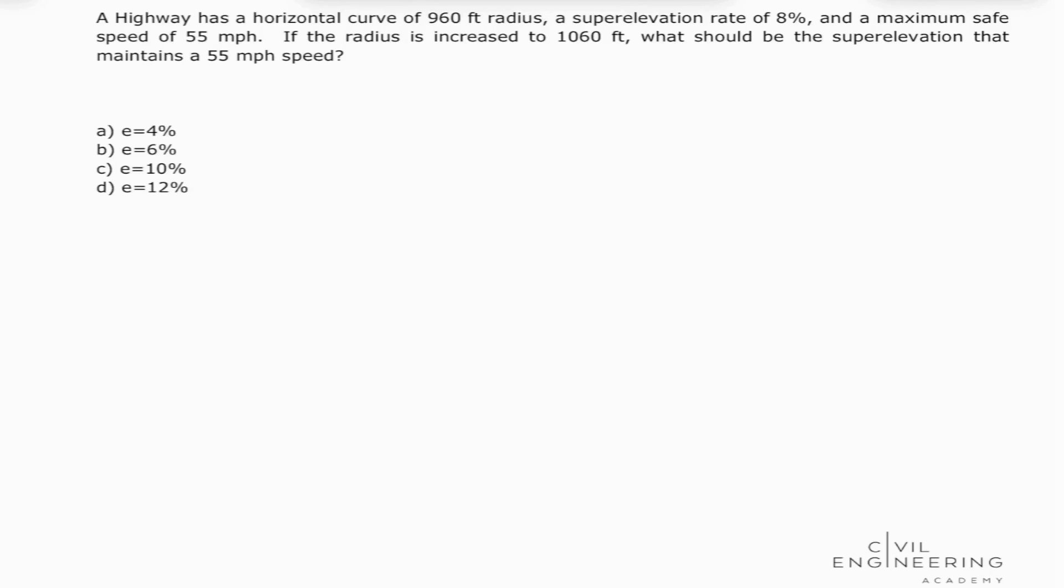The problem states: A highway has horizontal curve of 960 feet radius, a superelevation rate of 8%, and a maximum safe speed of 55 miles per hour. If the radius is increased to 1060 feet, what should be the superelevation that maintains the 55 miles per hour speed?